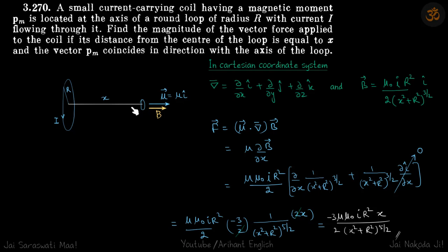First thing we know is the magnetic field at this point which is at a distance x is given as mu not i r square by 2 times x square plus r square power 3 by 2. In Cartesian coordinate system this will be in the i cap direction.